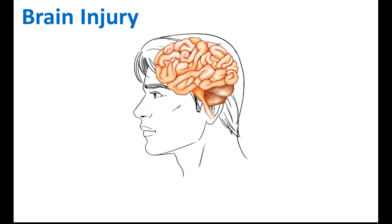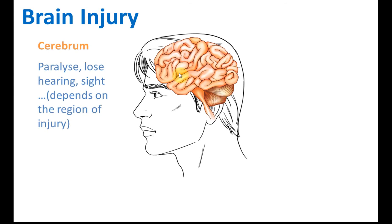For brain injury to other parts, this is a famous question. In the exam they will ask you what would happen if this part of the brain is injured. For the cerebrum overall, if it is injured it can cause paralysis, loss of hearing, loss of sight — and depending on the region, also loss of memory.